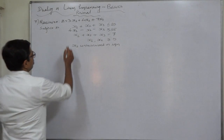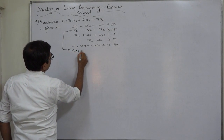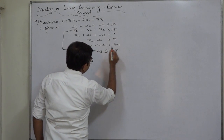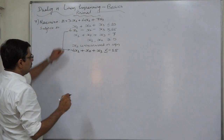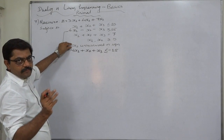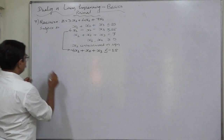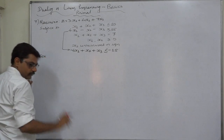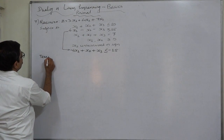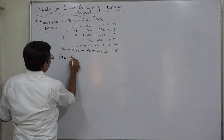First, let us revise the second constraint. It will become −4x1 + x2 + x3 ≤ −15. Another change needed: for the unrestricted variable x3, we substitute the difference of two non-negative variables. So let x3 = x4 − x5, where x4 and x5 are non-negative.